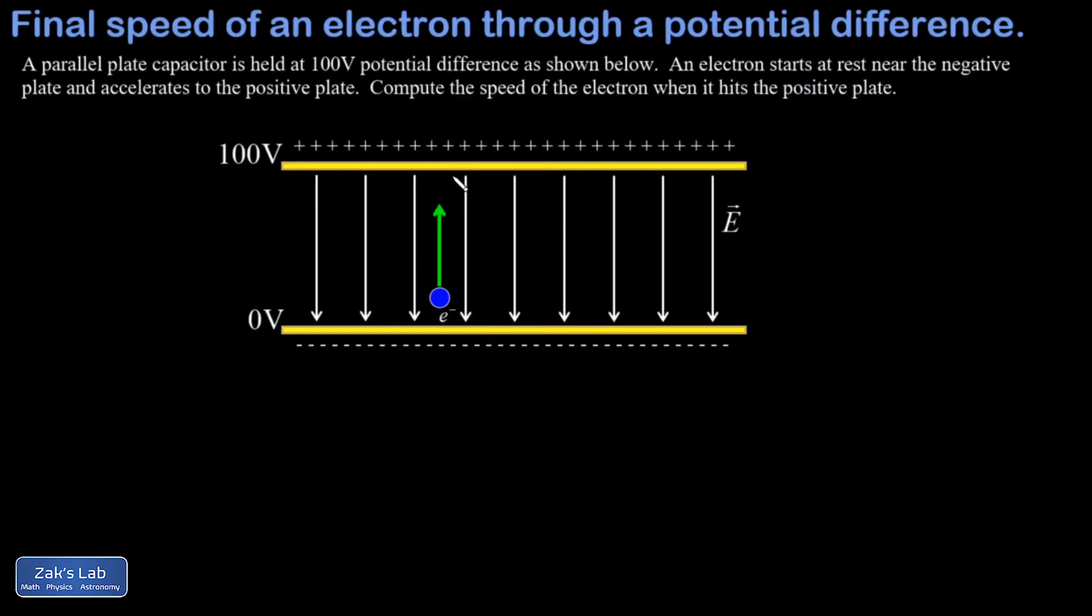So the intent with this problem is to use energy conservation to figure out the final speed of the electron. I'm going to start by looking at what's the change in potential energy for the electron as it goes from the starting point to the finishing point.